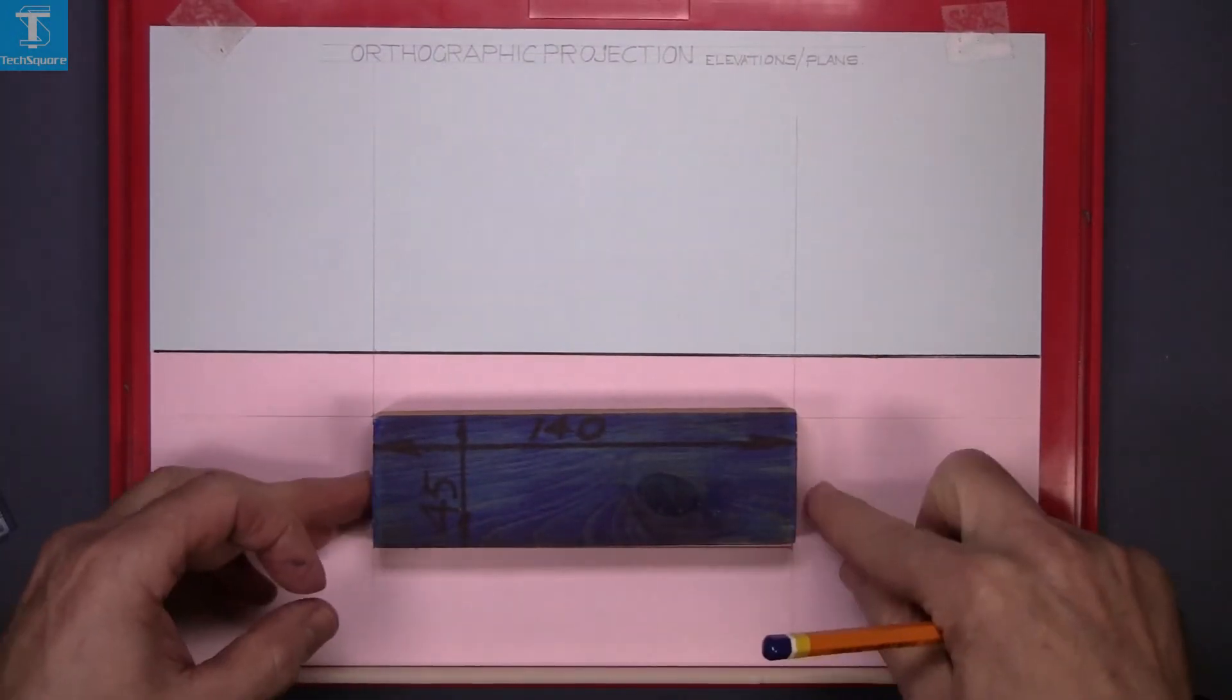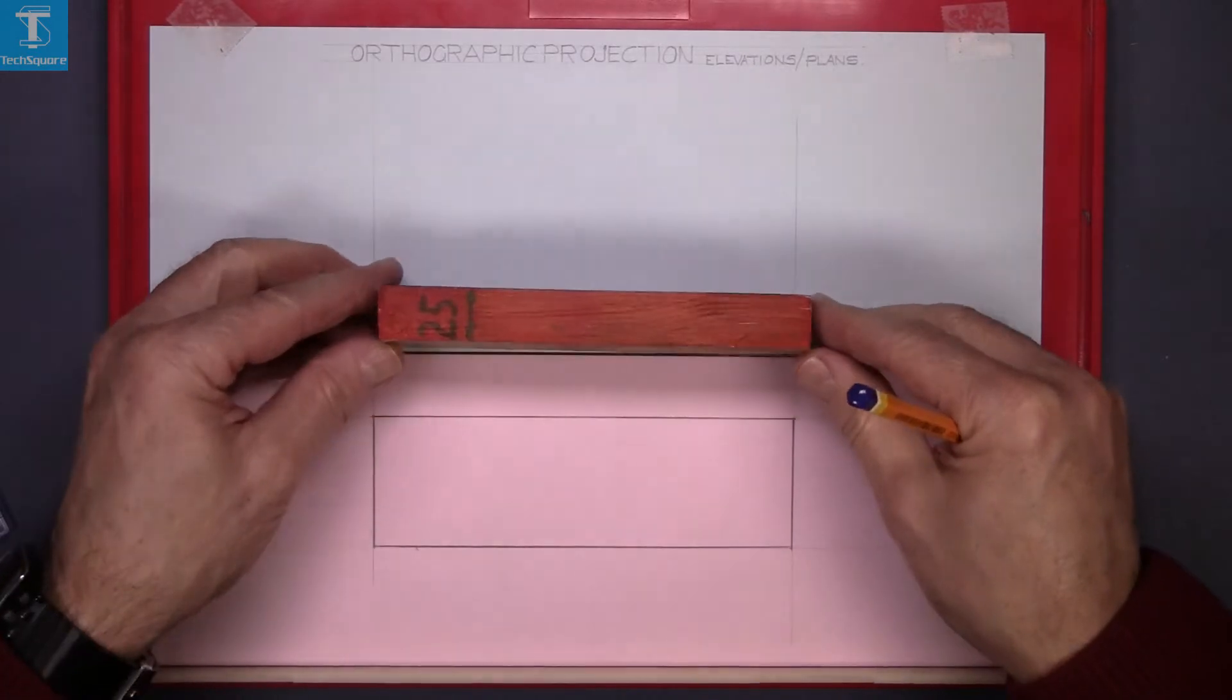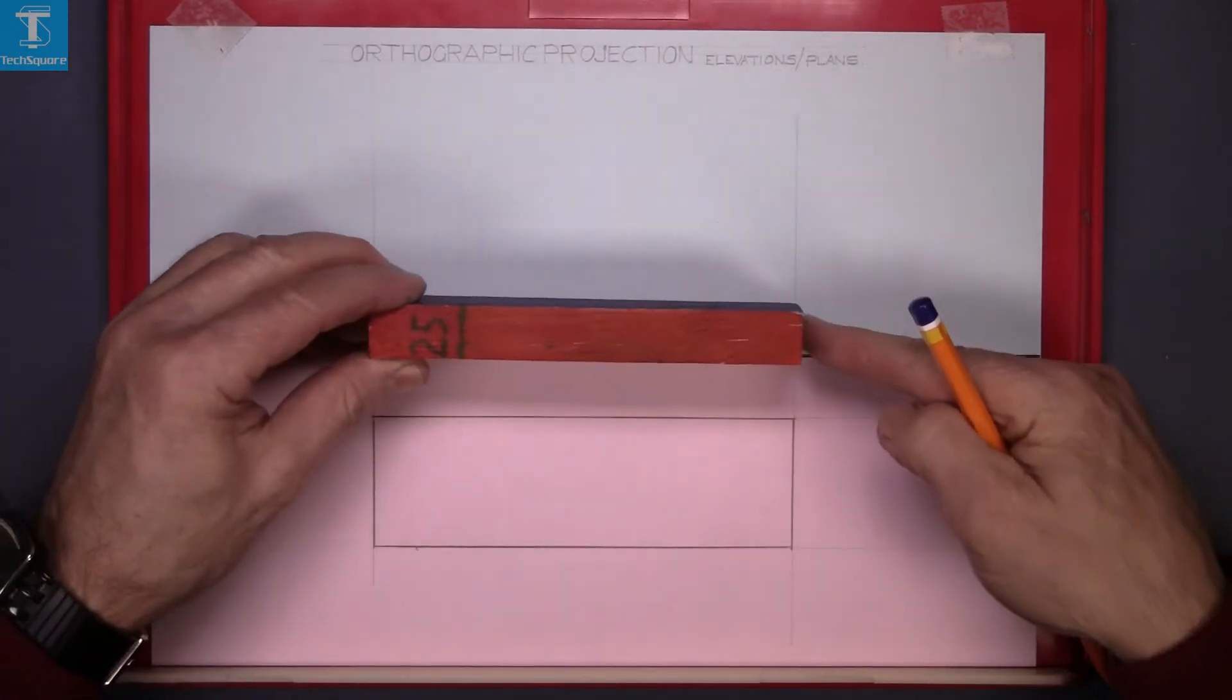That's the piece sitting on top. The elevation is going to be up in the blue section, right here.